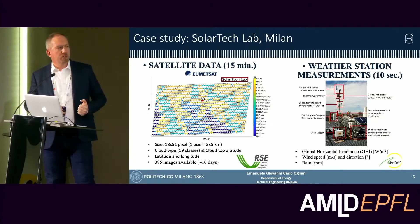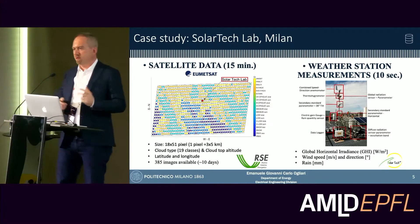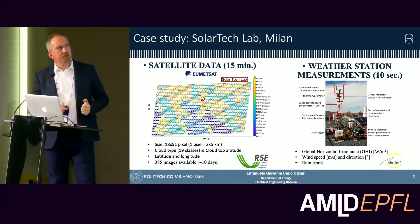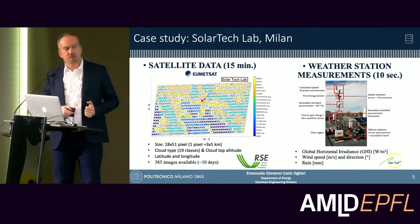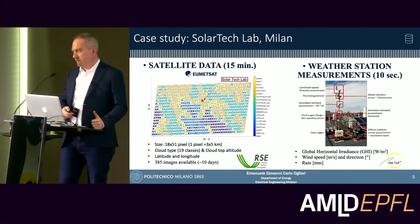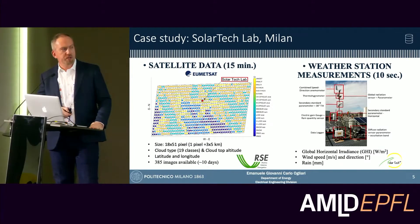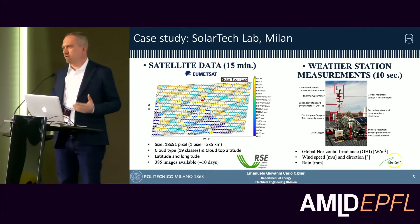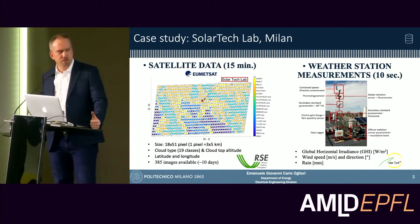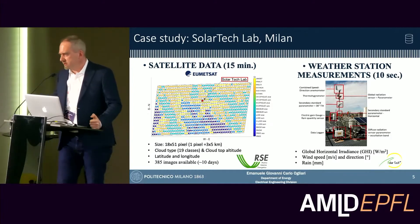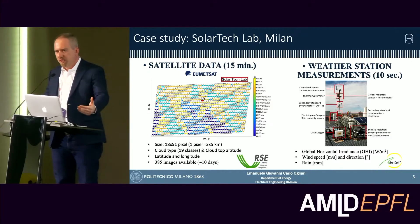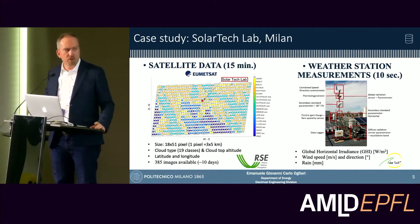We collected approximately 10 days of data from across the year and coupled this information with our weather station measurements, which record every 10 seconds a range of weather parameters. We consider only three of these; the most important is global horizontal irradiance, which is directly related to the power production of the photovoltaic system — a parameter typically provided by at least one sensor on most PV installations.